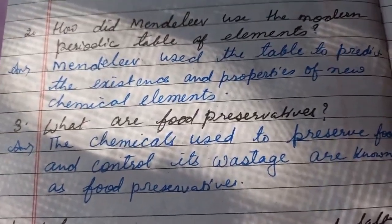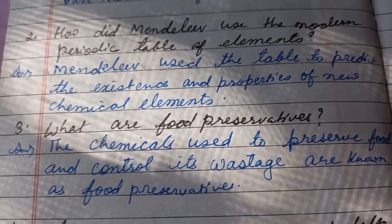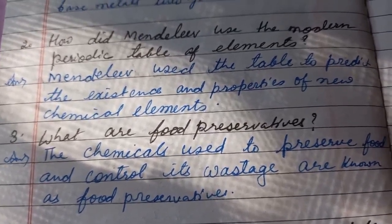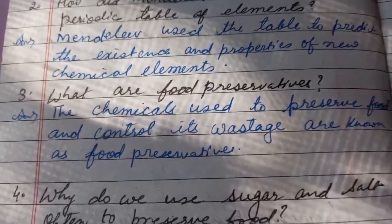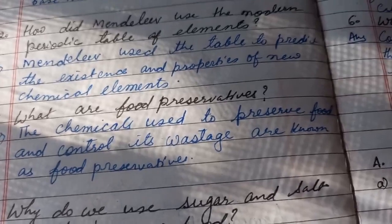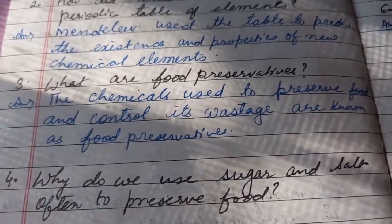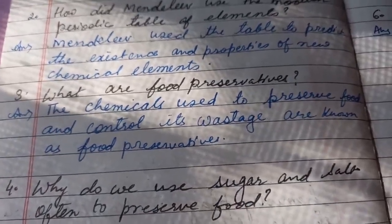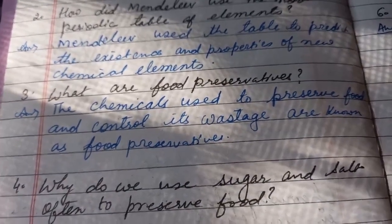Then third question: What are food preservatives? Here you have to define food preservatives. You will write: the chemicals used to preserve food and control its wastage are known as food preservatives. You can write two examples here also: sugar and salt.